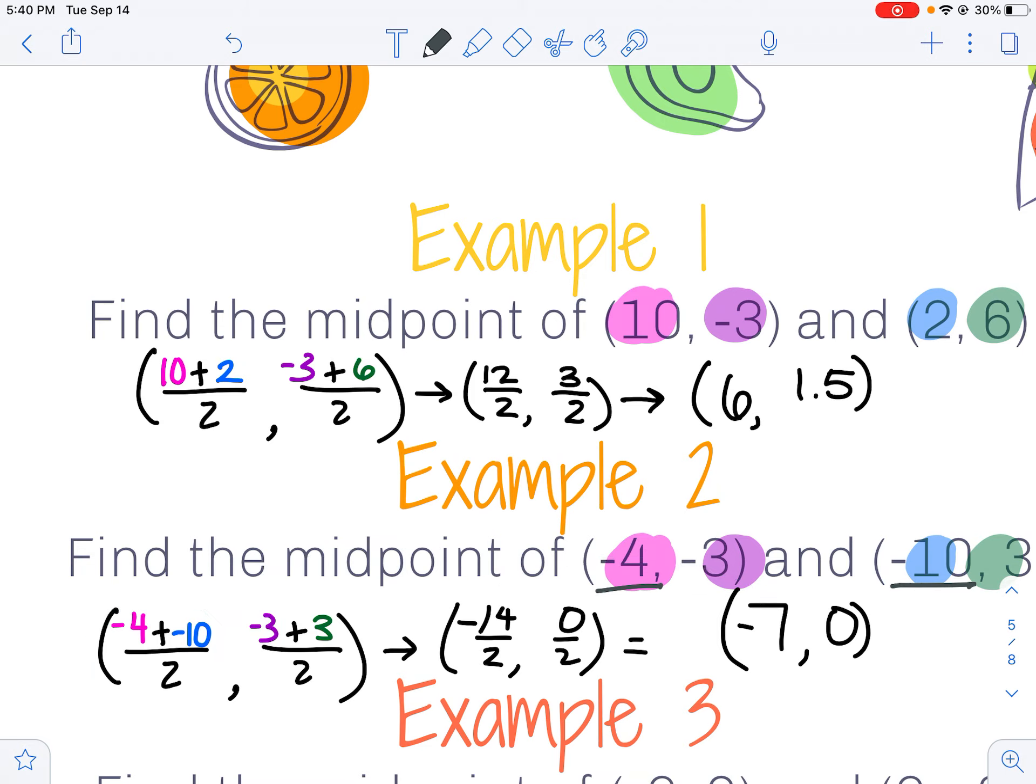Do the same thing with your y's, negative 3 and positive 3 added together and divided by 2 gives me 0 over 2 or just 0.